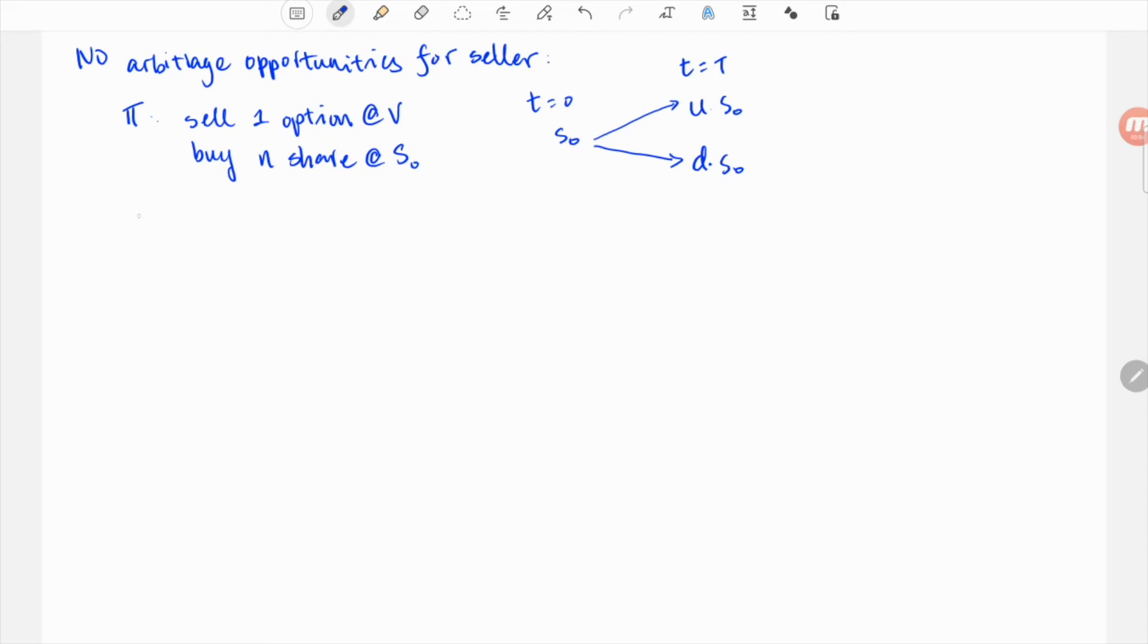For convenience we are going to assume the stock can go up to U times S0 or go down to D times S0. In our specific case above, U would be 1.2 while D is 0.99.